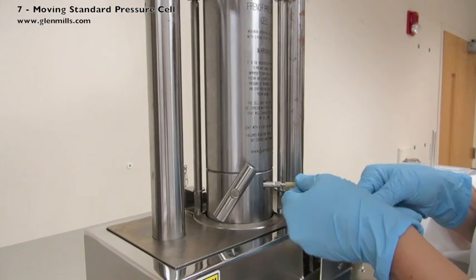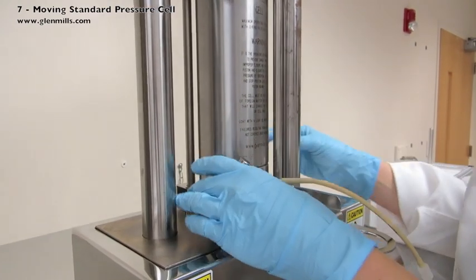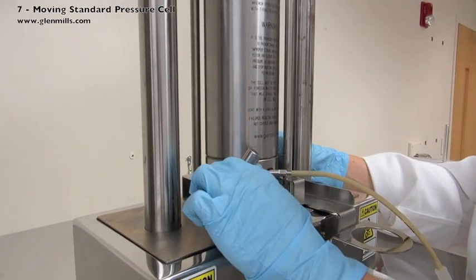A run of flexible tubing can be added to direct the flow. The flow valve assembly should be to the left side and is clear to turn.